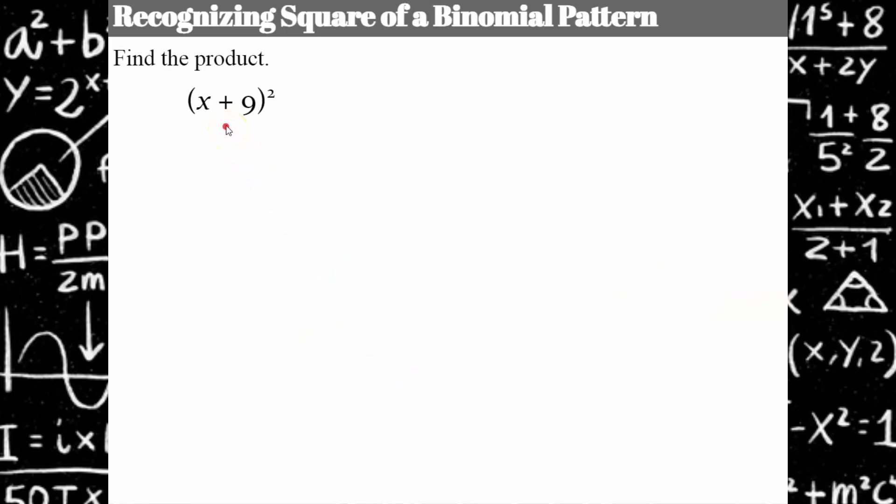So always works out that way if you recognize it. So let's look at this one, X plus 9 squared. So I'm just going to talk this through before I show you what happens. Square the first term, square the second term, the middle term is going to be 2 multiplied by X and 9. So 2 times 9 is 18, 18X. So already talking out loud, I should have X squared plus 18X plus 81. Let's see how I did.